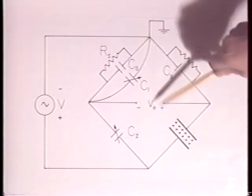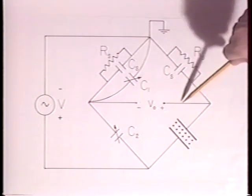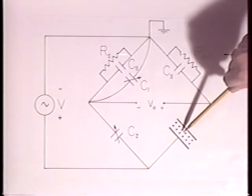With the array removed, this capacitor, C sub 2, is adjusted to null the output voltage, V sub 0. The output voltage resulting from the insertion of the array is a measure of the change in capacitance.